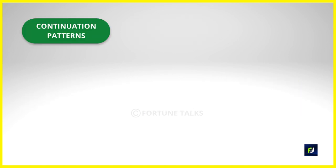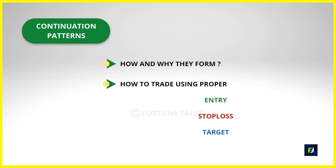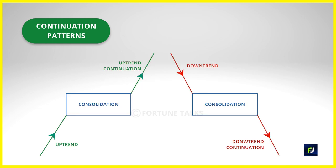The topic of discussion in this video is continuation chart patterns. I will talk about the five most common continuation chart patterns — why and how they form, and how to trade them with proper entry, stop loss, and target setups. Continuation chart patterns signal that the existing trend will most probably continue — in simple terms, the market will keep moving in the same direction after the pattern ends. Most of these patterns form as consolidations between trends, like the market taking a tea break due to exhaustion and getting back to work after refreshment.